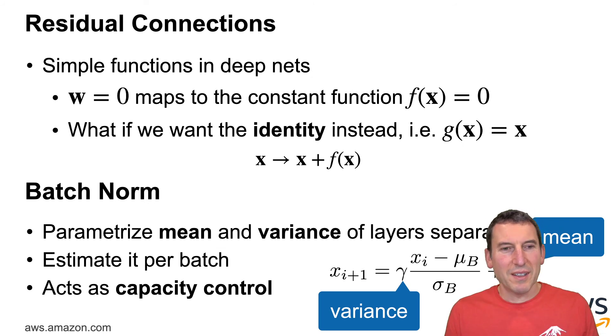Now, residual connections address another issue that's a very common problem in deep learning. Namely, which function do you consider simple? One way to say is, well, a simple function is the function f of x equals zero. That's indeed a very simple function, but maybe it's a little bit too simple. And as a matter of fact, this function does something. Namely, it changes the input to something else. One alternative would be to say, well, let's assume that we don't want to change anything. So we just want to have g of x equals x. In that case, I could, for instance, parameterize x being transformed into x plus f of x, such that if f of x equals zero, nothing happens. And if f of x is non-zero, then I can change things. This is called a residual connection.